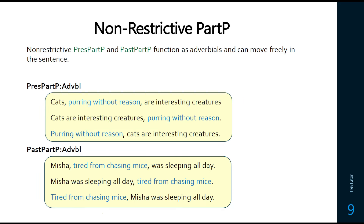For non-restrictive participle phrases, what's interesting is that they can move around. The comma is still the main hint, but these can move to the end or beginning of the sentence. 'Cats purring without reason are interesting creatures' — but we can say 'cats are interesting creatures, purring without reason' or 'purring without reason, cats are interesting creatures.' We can do this with past participle phrases as well: 'Misha, tired from chasing mice, was sleeping all day' or 'Misha was sleeping all day, tired from chasing mice' or 'tired from chasing mice, Misha was sleeping all day.'